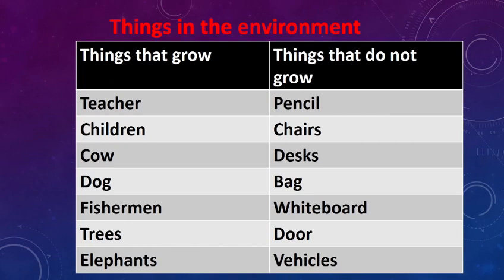Two columns. What are the things that grow? Teacher, children, cow, dog, fisherman, trees, elephant, like this.